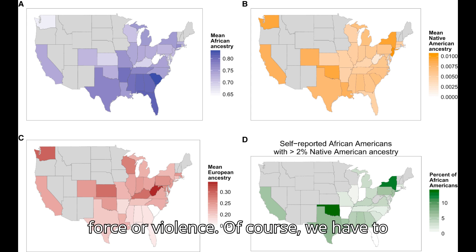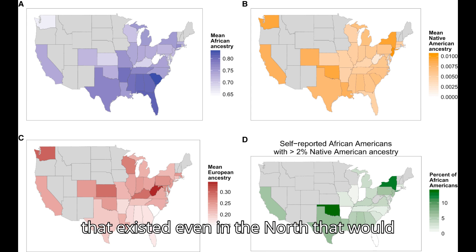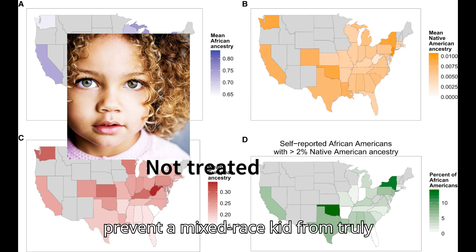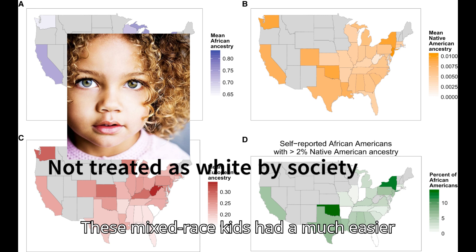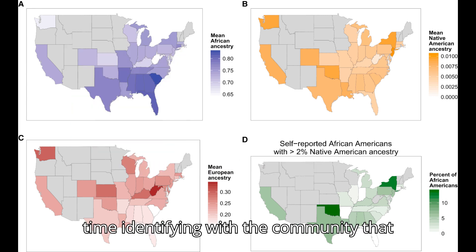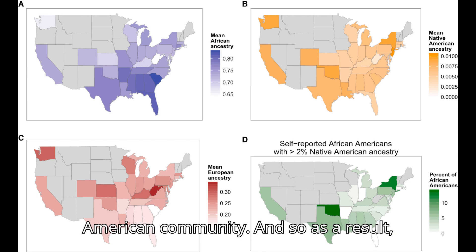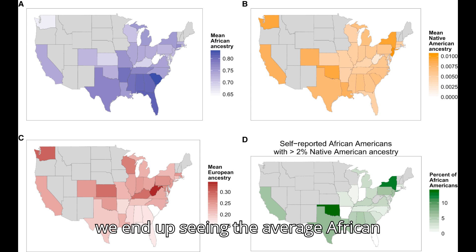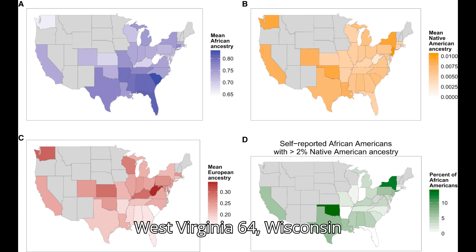Of course, we have to think back to racist social structures that existed even in the north that would prevent a mixed-race kid from truly assimilating with the white population. These mixed-race kids had a much easier time identifying with the community that does accept them, which is the African American community. And so, as a result, we end up seeing the average African American from Washington only carrying 66% African ancestry, West Virginia 64%, and Wisconsin 71%.